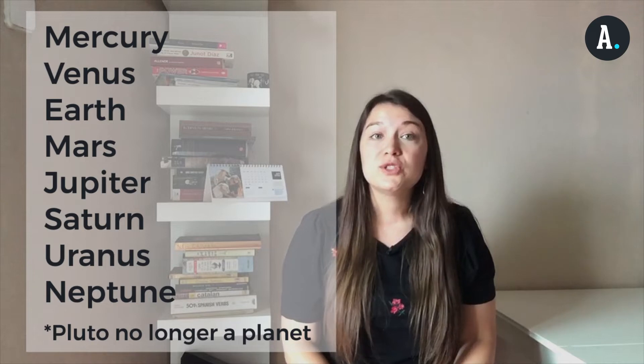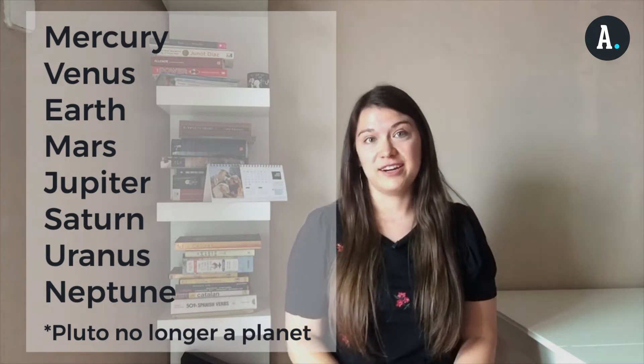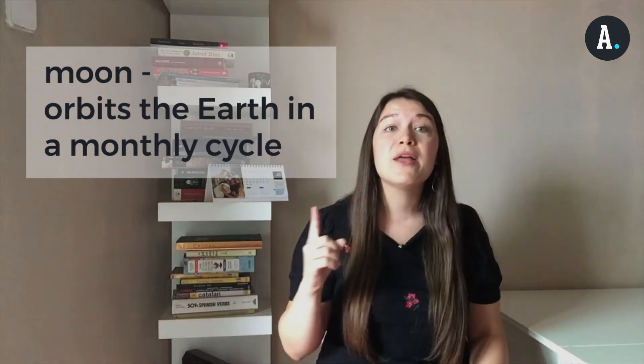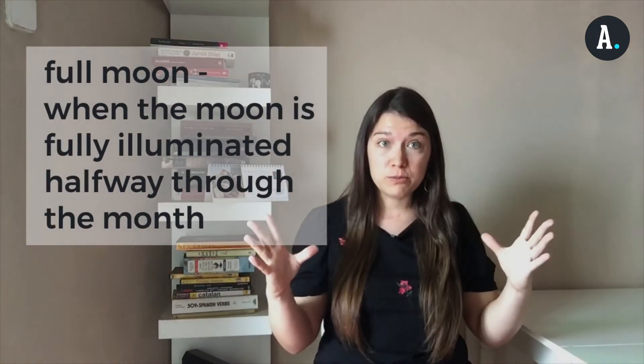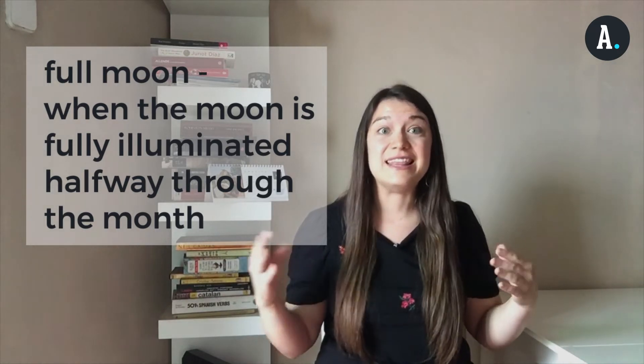Pluto used to be considered a planet but it is no longer considered a planet. The Earth has one moon that orbits around it in a monthly cycle. At the beginning of the month we cannot see the moon very much — only a very small sliver — but halfway through the month we see the full moon, illuminated, in this cycle.